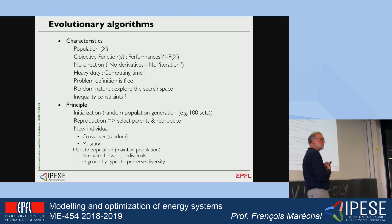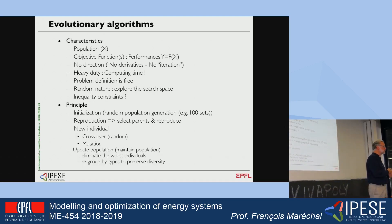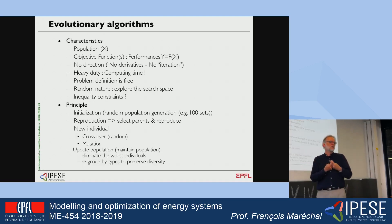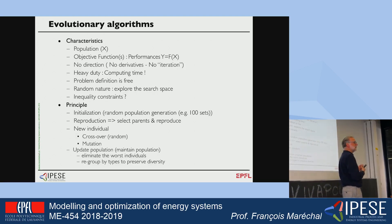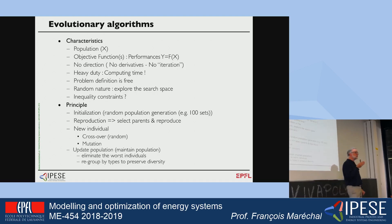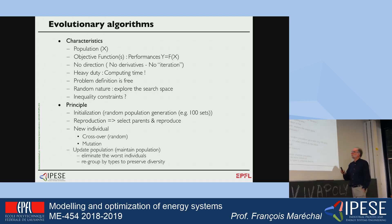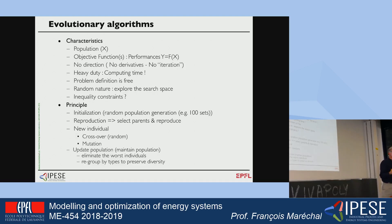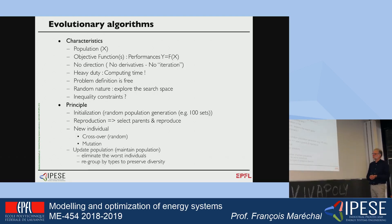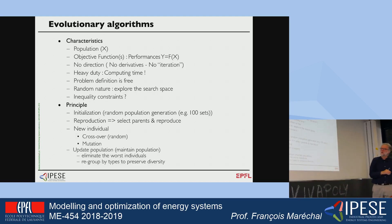We do exactly the same: the best-fitting individuals in the population are the ones with the best value for the objective function. We create a population, calculate objective functions for all elements, then build children. To build children, we select parents and decide which part of the father's genes and which part of the mother's genes are combined. The children are proposed in the list, and during reproduction we also introduce mutation to keep diversity in the population.